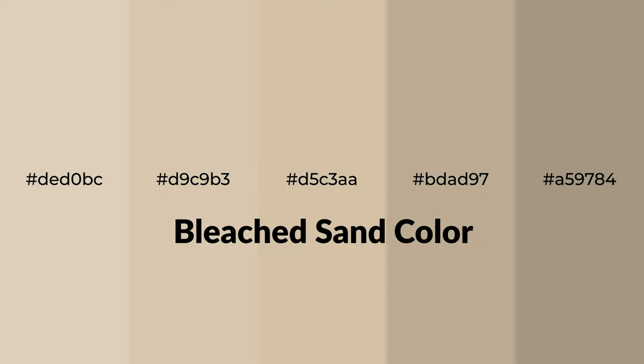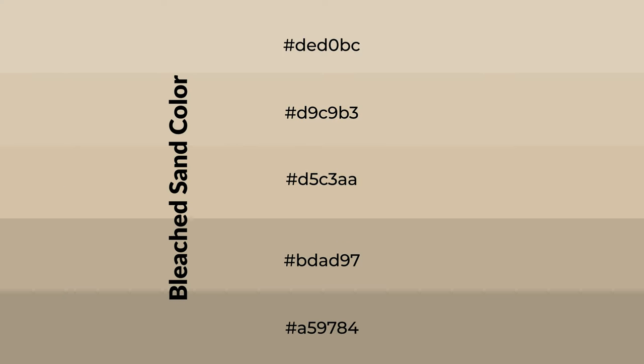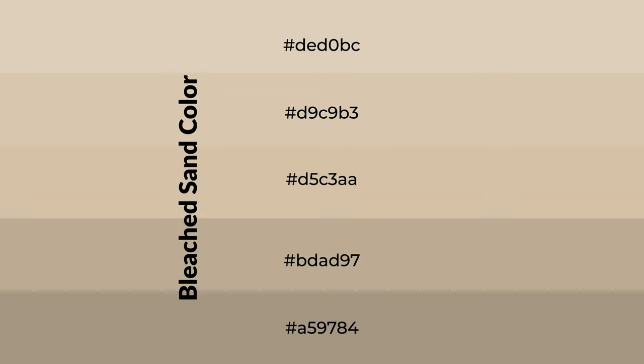Warm shades of bleached sand color with yellow hue for your next project. To generate tints of a color, we add white to the color. Tints create light and exquisite emotions. To generate shades of a color, we add black to the color, and it is used in patterns, 3D effects, and layers. Shades create depth and drama.